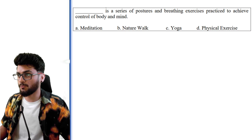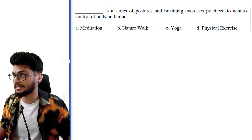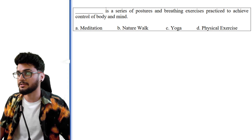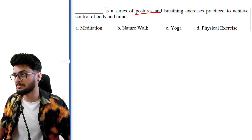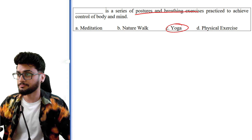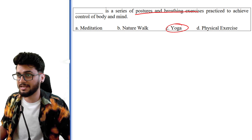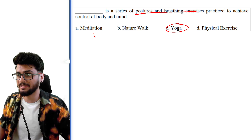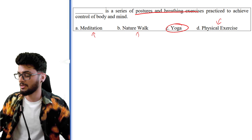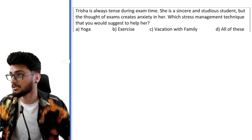'Dash is a series of postures and breathing exercises practiced to achieve control of mind and body.' So postures and breathing exercises — that happens in yoga. So yoga is the right answer. In meditation you only have breathing. In a nature walk you're just walking. Physical exercise is just about getting work done with your muscles.